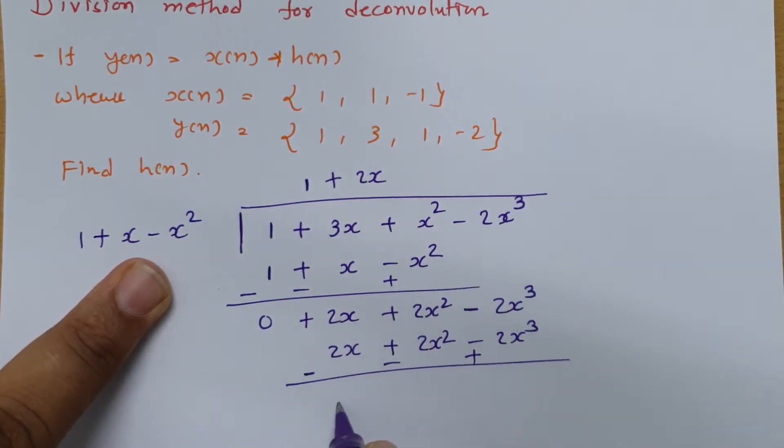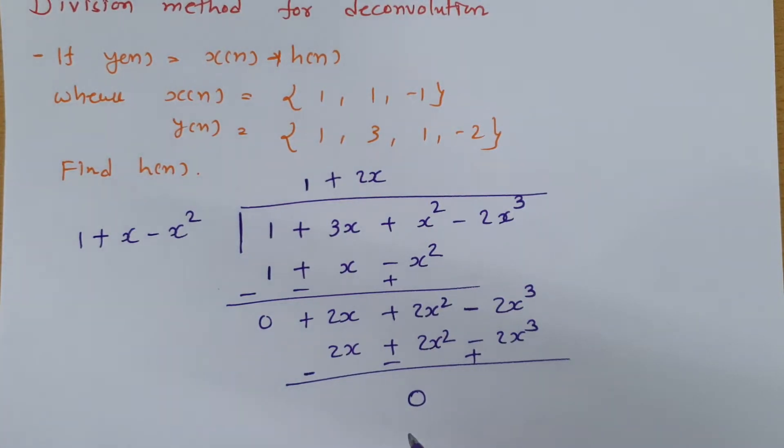If you change polarity (minus, minus, minus becomes plus), 2x - 2x = 0, 2x² - 2x² = 0, and 2x³ - 2x³ = 0. So the remainder is 0.